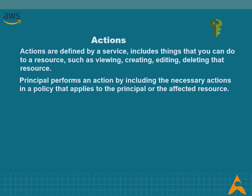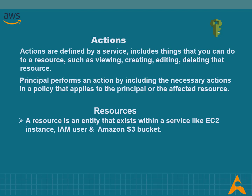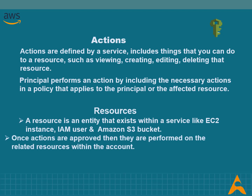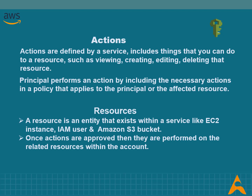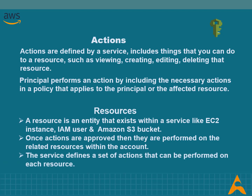After your request has been authenticated and authorized, AWS approves the actions in your request. Actions are defined by a service and are the things you can do to a resource — such as viewing, creating, editing, or deleting that resource. For example, IAM supports around 40 actions for a user resource, including actions like CreateUser, DeleteUser, GetUser, and UpdateUser. To allow a principal to perform an action, you must include the necessary actions in a policy that applies to the principal or the affected resource.